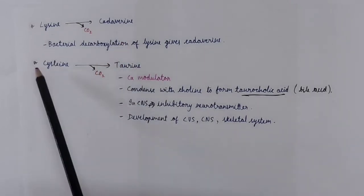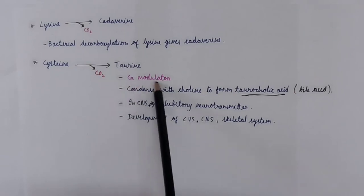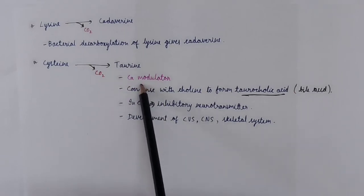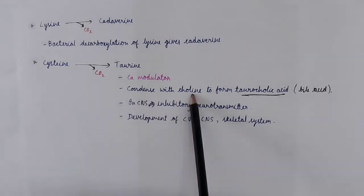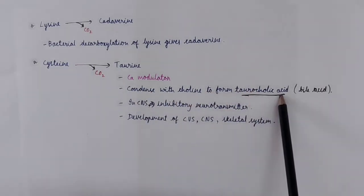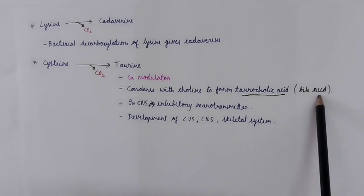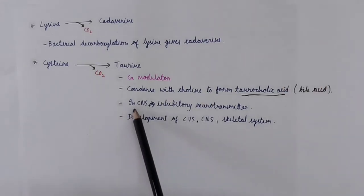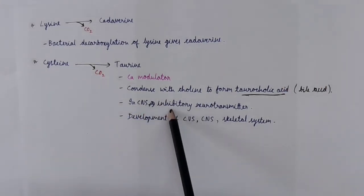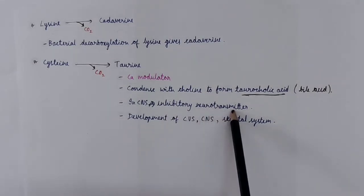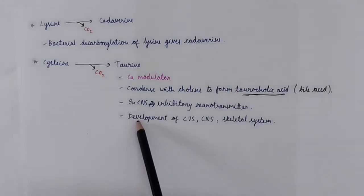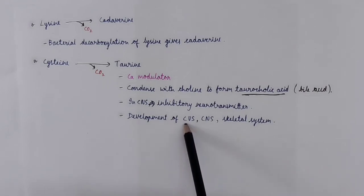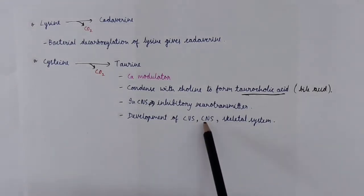Taurine, which is formed from cysteine, is a calcium modulator. It maintains calcium movement. It condenses with choline to form taurocholic acid, which is a bile acid. In central nervous system, it acts as an inhibitory neurotransmitter. Also, it is involved in development of cardiovascular system, central nervous system, and skeletal system.